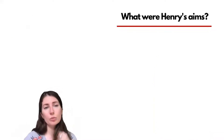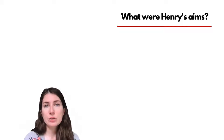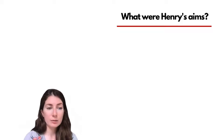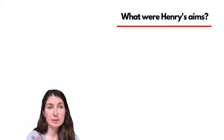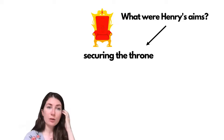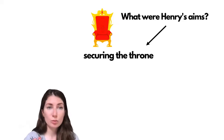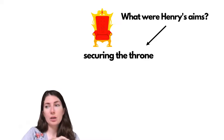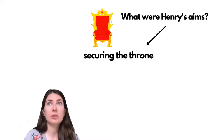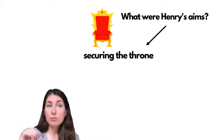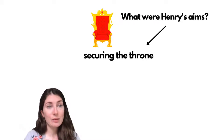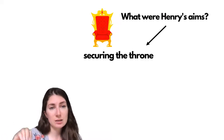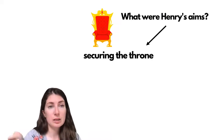Before we can even begin, we need to brainstorm and work out what actually are Henry's aims with foreign policy. I would argue there are three clear aims. The first one: he wants to secure his throne. He needs to use foreign powers to help him deal with the domestic threat — both muting the international and domestic threat, and using foreign policy to help deal with that domestic threat.